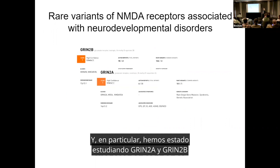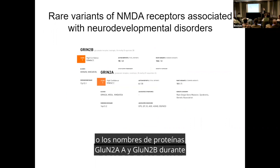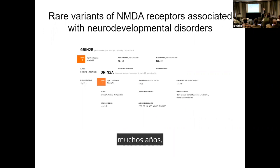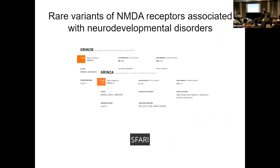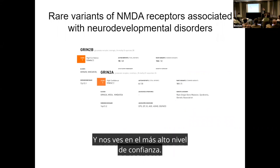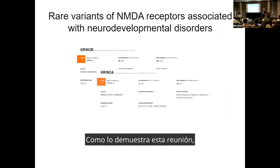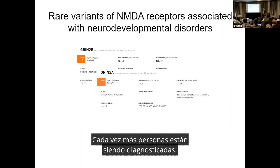In particular, we've been studying GRIN2A and GRIN2B, or the protein names GluN2A and GluN2B, for many years. With sequencing, you can look in sites like SFARI and see it's in the highest confidence level. As evidenced by this meeting, more and more people are being diagnosed.